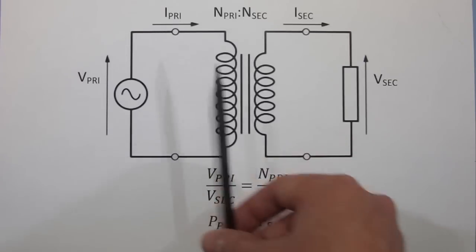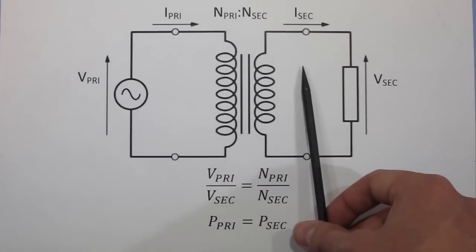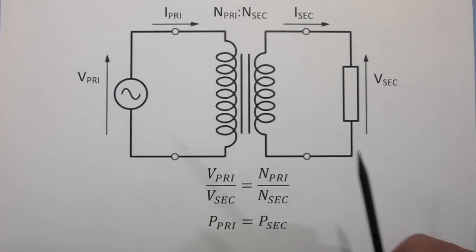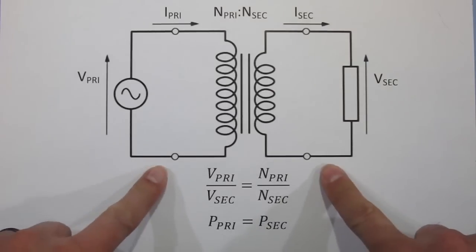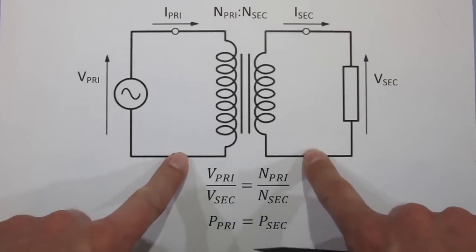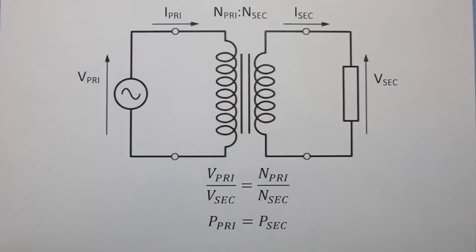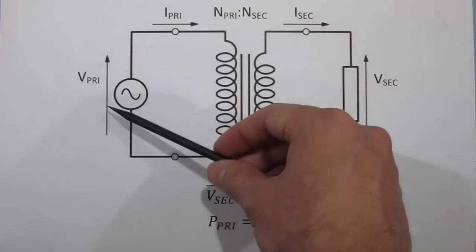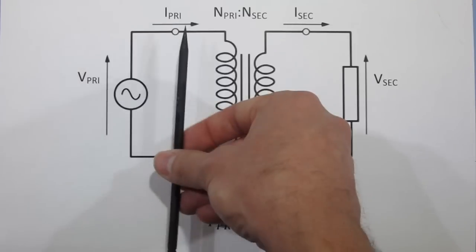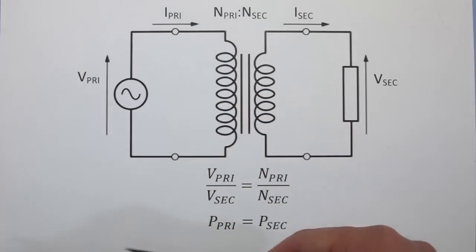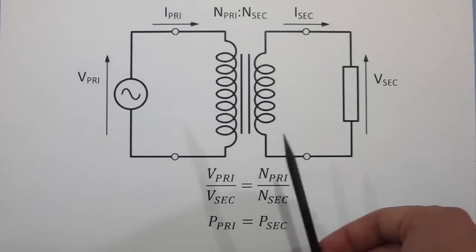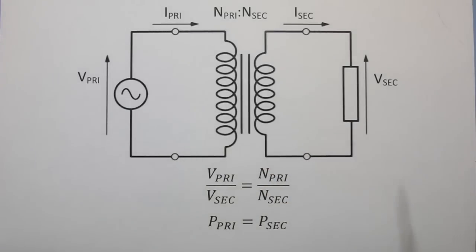On the left we have the primary and on the right we have the secondary. The two coils themselves are completely isolated to DC - if we place a continuity meter between these points we'd get an infinite impedance. But when we apply an AC waveform to one of the windings, we create a varying magnetic field which induces a voltage in the other winding.